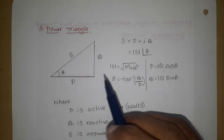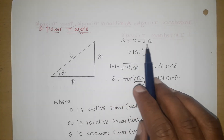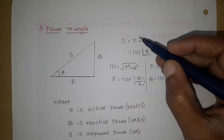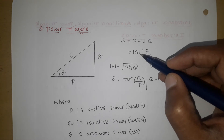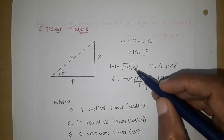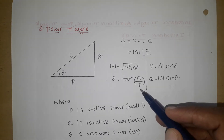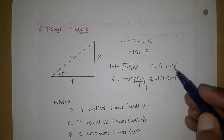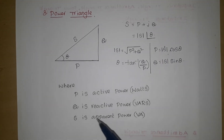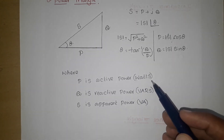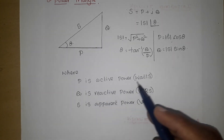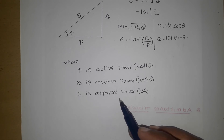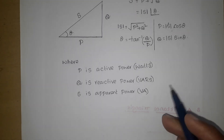Power triangle. Similarly, S equals complex power P plus jQ, and the same S can be written as mod S at an angle of theta. If we know P and Q, we can find mod S and theta. Mod S equals root over P squared plus Q squared, and theta equals tan inverse Q by P. Similarly, if we know mod S and theta, we can find P and Q: P equals mod S cos theta and Q equals mod S sin theta. P is active power in watts, Q is reactive power in volt ampere reactives, and S is complex power or apparent power in volt amperes.